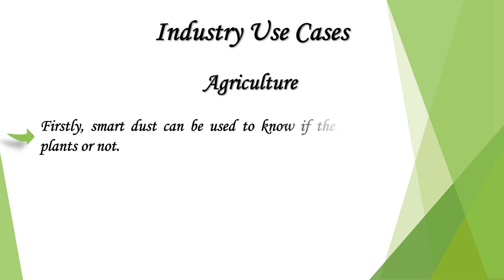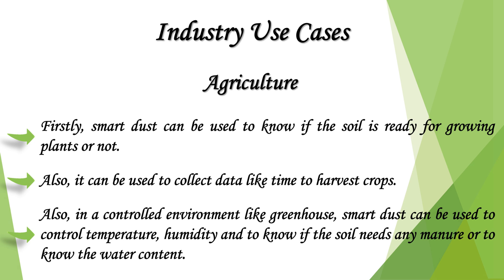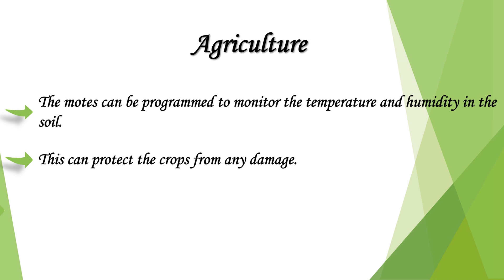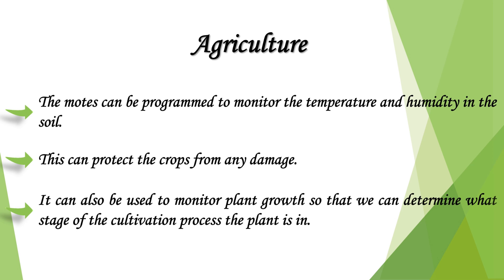In agriculture, smart dust can be used to determine if soil is ready for growing plants, and to collect data like time to harvest crops. In a controlled environment like a greenhouse, smart dust can control temperature and humidity, monitor soil for needed manure, and measure water content. The motes can be programmed to monitor temperature and humidity in the soil to protect crops from damage. It can also monitor plant growth to determine what stage of the cultivation process the plant is in.